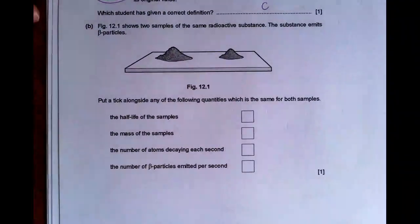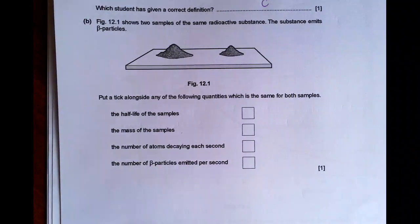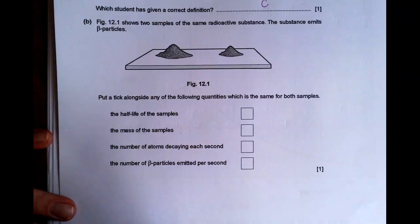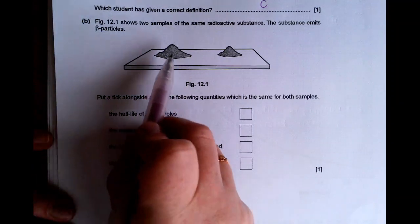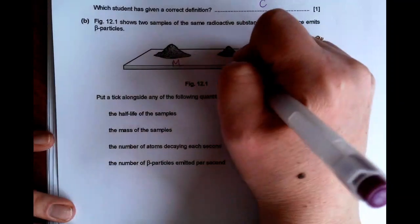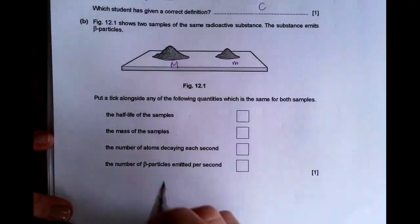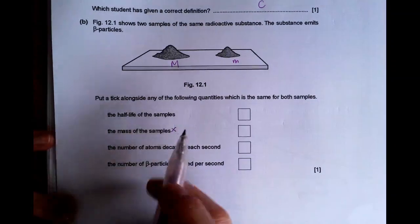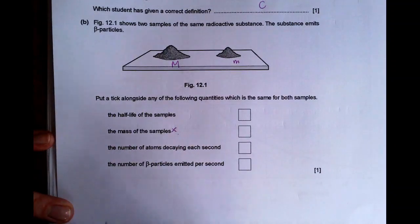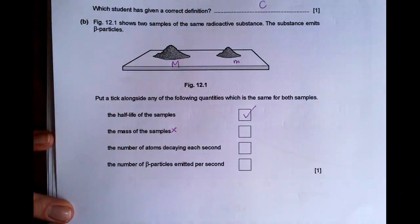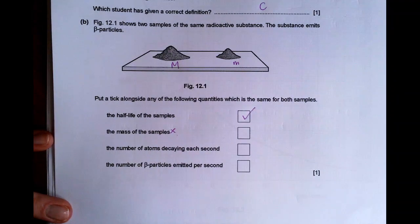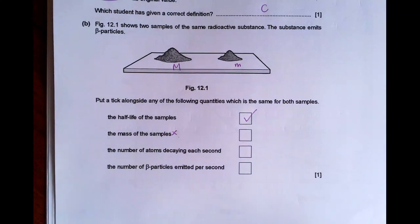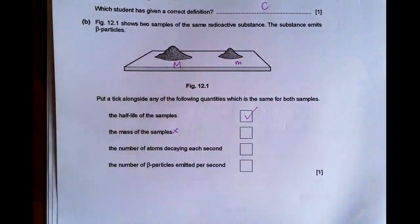So, part B, figure 12.1 shows two samples of the same substance emits beta particles, which is the same. It's the same thing, but we've obviously got a much bigger mass on the left and a much smaller mass on the right. So, it's definitely not the mass of the samples. They're different. So, we know that the half-life of a particular isotope is constant. So, it's definitely going to be the half-life. The number of atoms decaying each second is not going to be the same because you have a different sample size. And therefore, the number of beta particles emitted is also not going to be the same. So, it should just be the top one that you tick there.